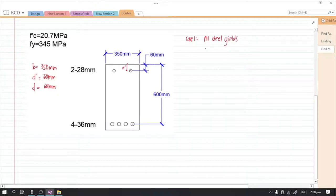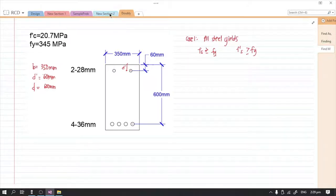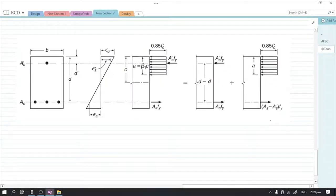So meaning, the fs, this is the actual stress of the tension reinforcement, should be greater than or equal to fy, and also the actual stress for the compression reinforcement should be greater than or equal to fy. So now how are we going to prove that assumption? Where are we going to start? How is it analyzed in doubly reinforced beams?